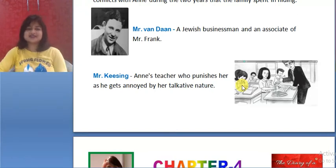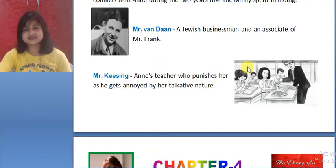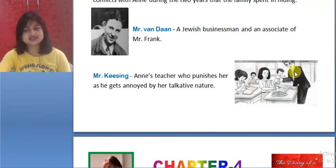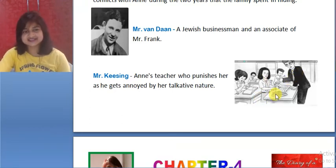Actually, Anne was a talkative girl, so Mr. Kissing used to give her writing punishment. This is the picture of Mr. Kissing, the math teacher, and a school classroom scene. Annoying means angry — she used to talk in class, therefore Mr. Kissing used to provide her a writing task.